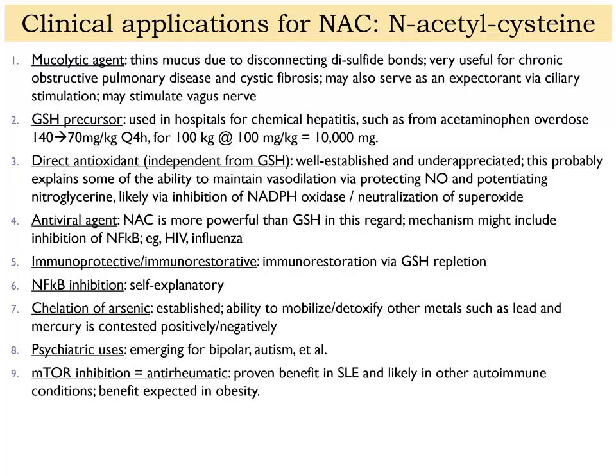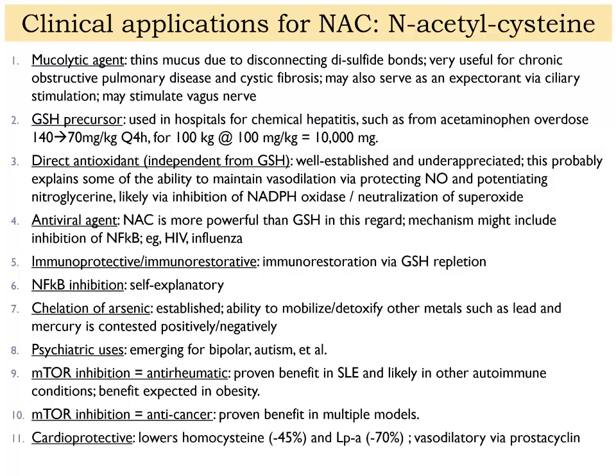Psychiatric uses we'll talk about next time. What we're focusing on right now is the inhibition of mTOR for anti-rheumatic effects — and by extension, mTOR also plays a role in cancer, so inhibiting mTOR with NAC would be expected to have an anti-cancer benefit as well. NAC is also cardioprotective: it lowers homocysteine by about 45% and Lp(a) by about 70%. It is vasodilatory via prostacyclin and reno-protective, causing efferent arterial vasodilation and increasing glutathione production, which helps protect the kidneys especially during radiocontrast studies.